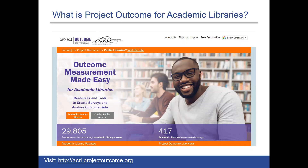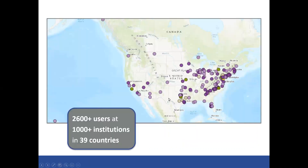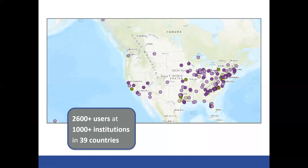Project Outcome for Academic Libraries launched in April of 2019. It's still pretty new but it's based on a model developed and tested by the Public Library Association, which has been in the field since 2015. As of just this week we had over 2,600 users at over a thousand institutions in 39 countries. It is open to all academic libraries internationally. The last screen showed 29,000 survey responses and that's now over 30,000 — it's really constantly being engaged with and growing.